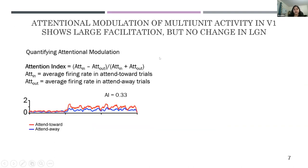To quantify the differences between attend-toward and attend-away conditions, we use an attention index — essentially the difference over the sum of average firing rates in attend-toward versus attend-away trials. In this example PSTH, we compute the difference between the red and blue curves across the entire time period, giving an AI of 0.33. Because this is a bounded index, positive values indicate attentional facilitation and negative values indicate attentional suppression.